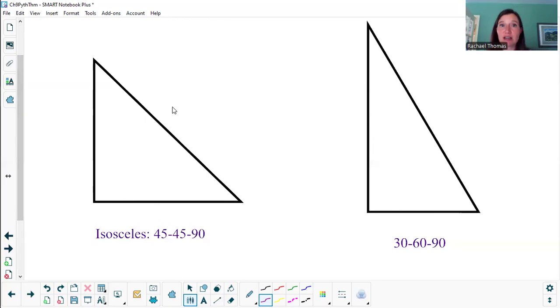There's very little computation that goes into this, it's mostly just recognizing what's happening. Alright, so our first special right triangle, it's a right triangle, it's got a 90 degree angle, and it's special because it's isosceles.